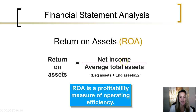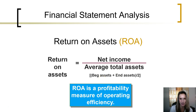The net income amount can be found on the income statement. The average total assets can be roughly calculated by taking the dollar amount of assets at the beginning of the accounting period, adding the dollar amount of assets at the end of the accounting period, and dividing by two.